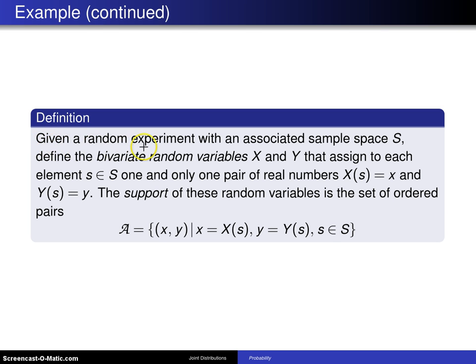So the definition is: given a random experiment with an associated sample space S, define the bivariate random variables X and Y that assign to each element s, an element of the sample space S, one and only one pair of real numbers X(s) equals x and Y(s) equals y. The support of these random variables is the set of ordered pairs.